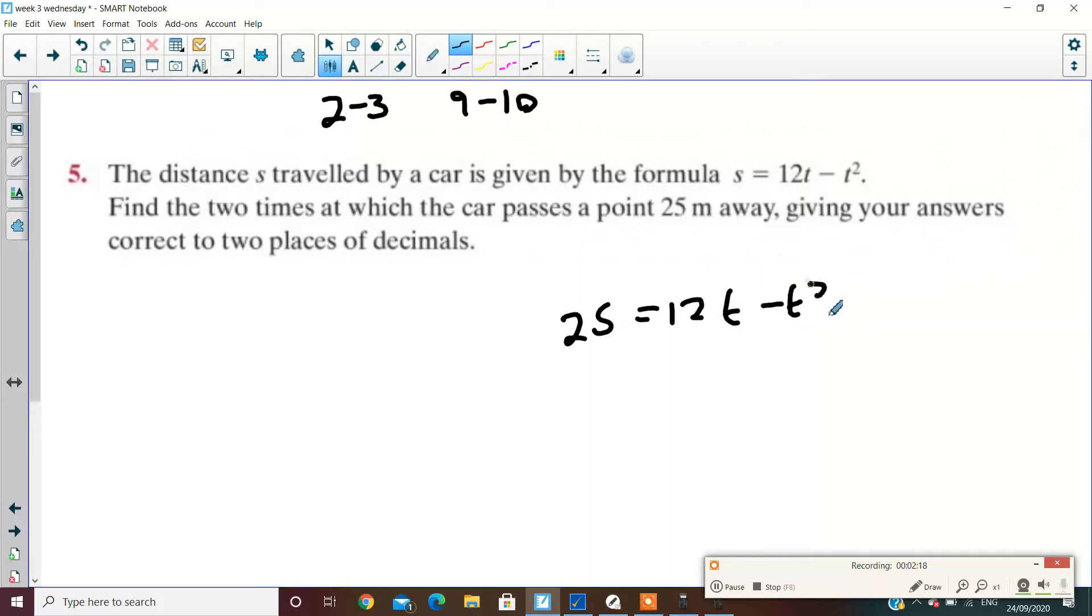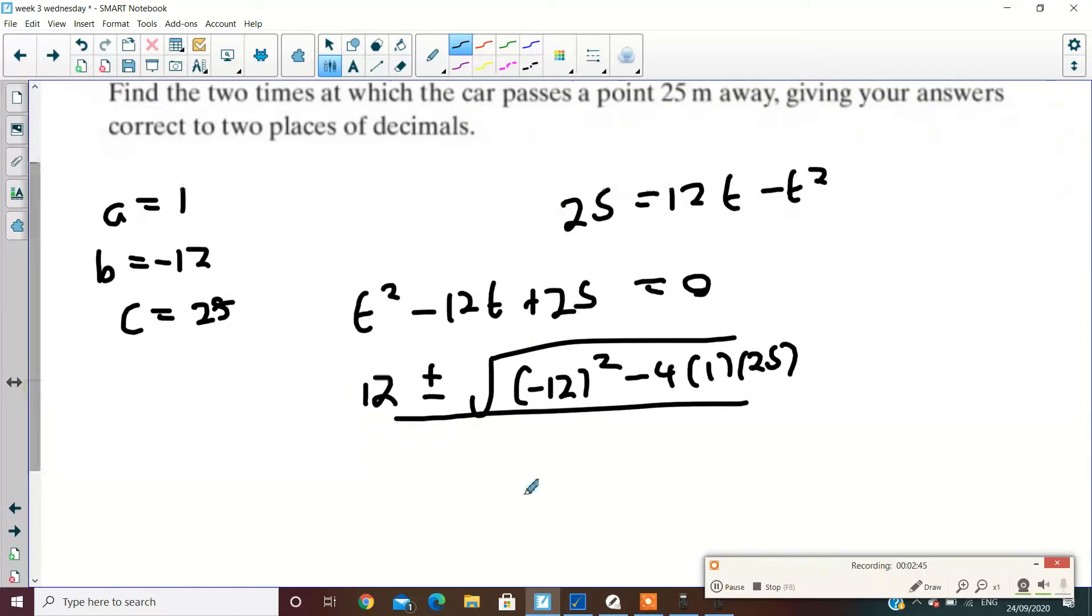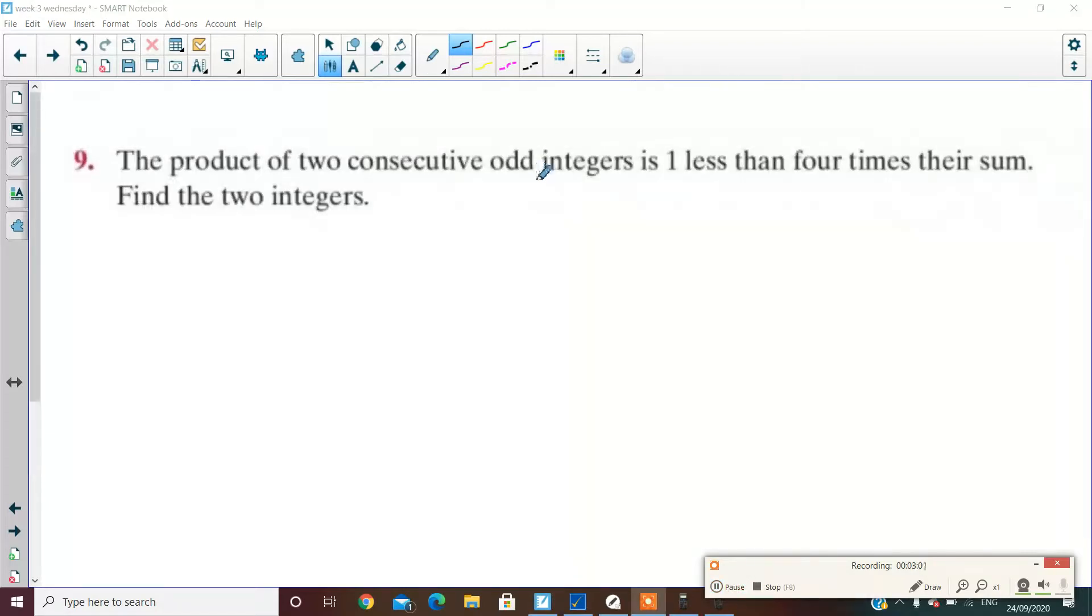So what you're going to have is s is 25 equals 12t minus t squared. Move it all to the left, you're going to get t squared minus 12t plus 25 equals zero. You're going to have an a value of 1, the b value minus 12, and a c value of 25. Then you're going to do the minus b formula. So you're going to end up with 12 plus or minus the square root of minus 12 squared minus 4 times 1 times 25, all over 2 times 1. And what did you get, sir? In the corner, 9.32 and 2.68, as predicted.